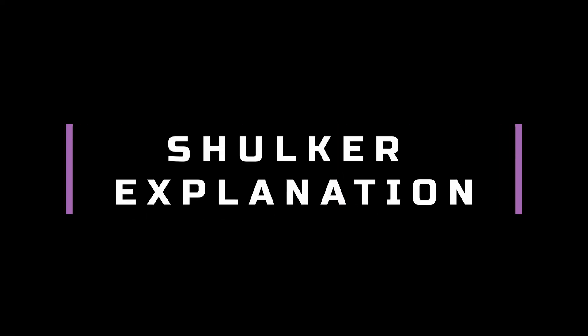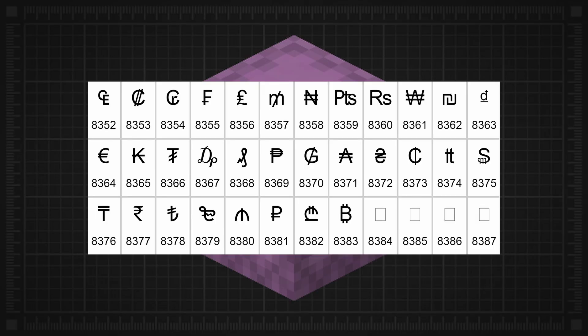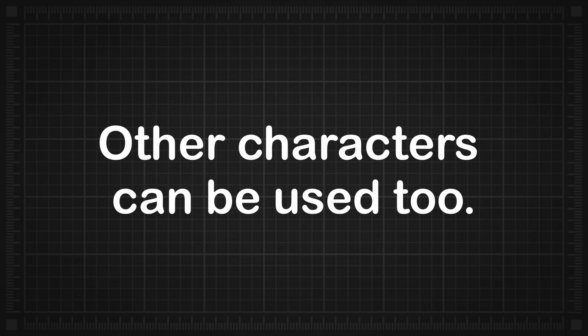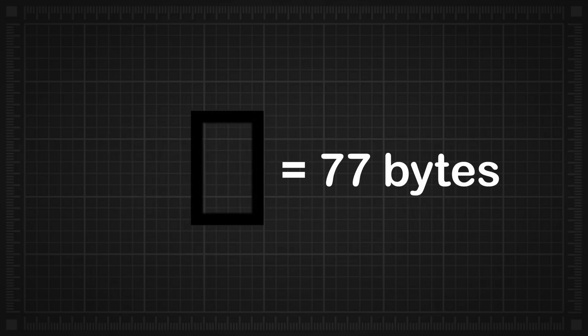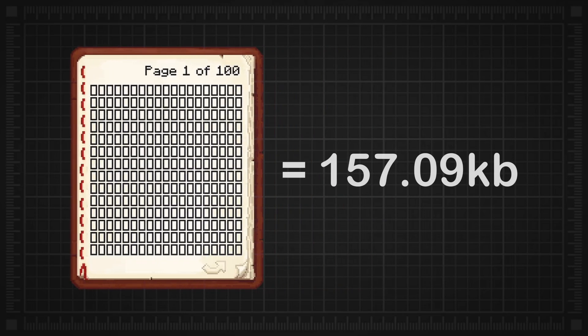Shulker Explanation. The shulker box is filled with a lot of books containing Unicode characters. The most common character used for this is this. This character can add 77 bytes to the book. So if you were to completely fill a book with these, it would hold up to 157.09 kilobytes alone.